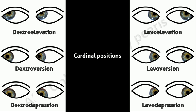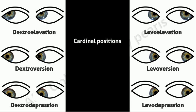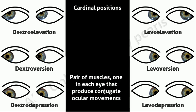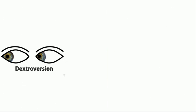The cardinal positions are so called as in each of these positions one extraocular muscle is the prime mover of each eye. These pairs of muscles, one in each eye, that produce conjugate ocular movements are termed yoke muscles.